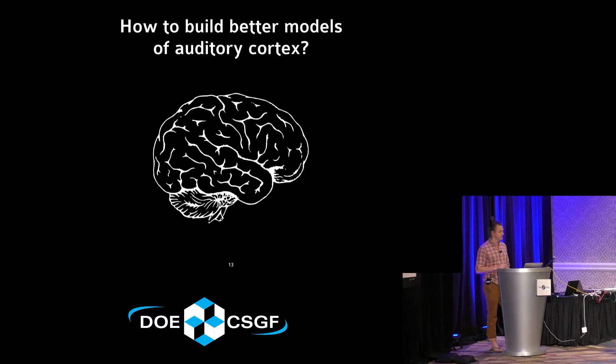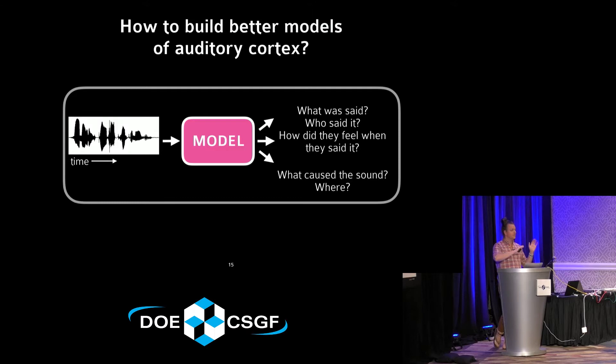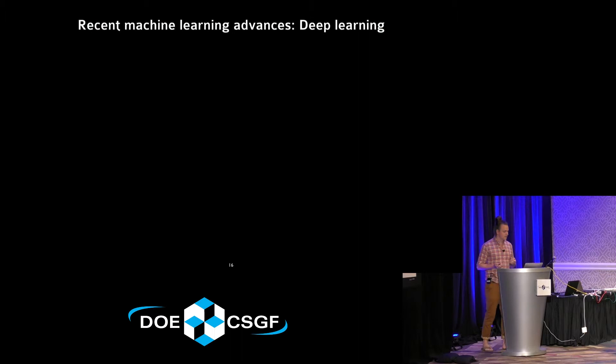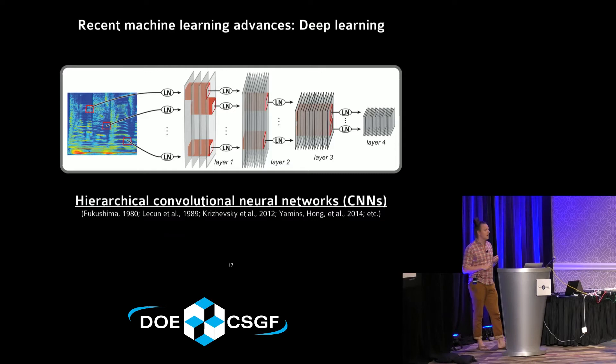How can we build better models of auditory cortex? Instead of compiling all known facts about the auditory system, I'm going to take a different approach: set aside everything we know about the brain and turn to engineering to make a model that does some of the things that we do. We'll use recent advances in deep learning — specifically hierarchical convolutional neural networks — which have produced state-of-the-art performance in computer vision, automated speech recognition, and many other domains.